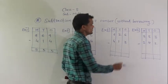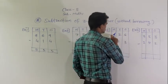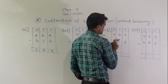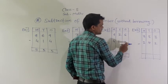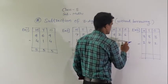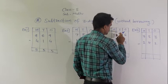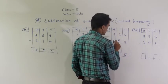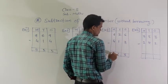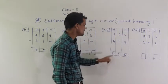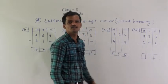Next example: 626 minus 413. So, 6 minus 3, 3. 2 minus 1, 1. 6 minus 4, 2. Read this number: 200 and 13, 213.